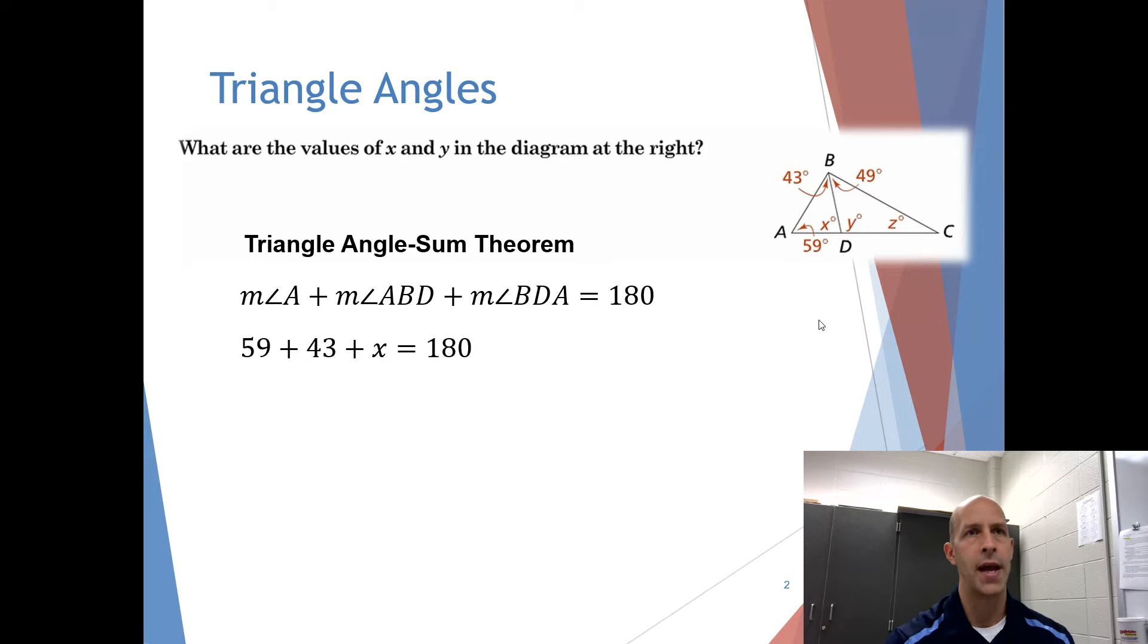We can see that angle A is 59, and angle ABD is 43. Angle BDA, that's x, and those have to add up to 180. Therefore, x has to be 78.